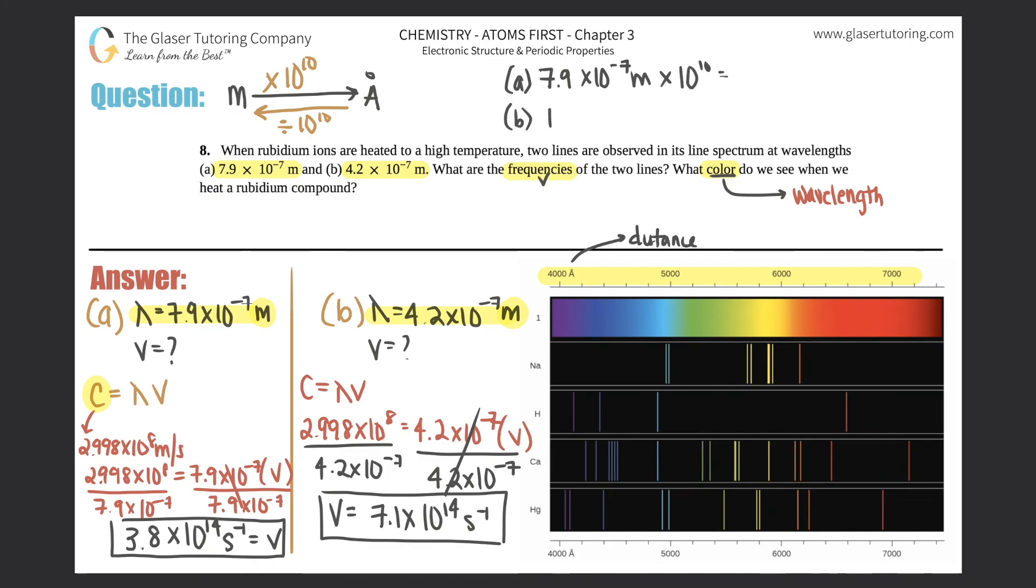4.2 × 10^-7 meters times 10^10—that's the quick way of converting. So for the top one, for a: 7.9 × 10^-7 times 10^10 gives you 7900 angstroms. And for b, you get 4200 angstroms.